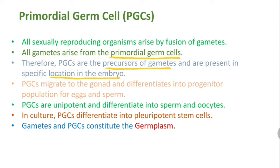PGCs migrate to the gonad and differentiate into the progenitor population for eggs and sperm. PGCs are unipotent and differentiate either into sperm or oocytes, whereas in culture, PGCs differentiate into pluripotent stem cells. Gametes and PGCs collectively constitute the germplasm.